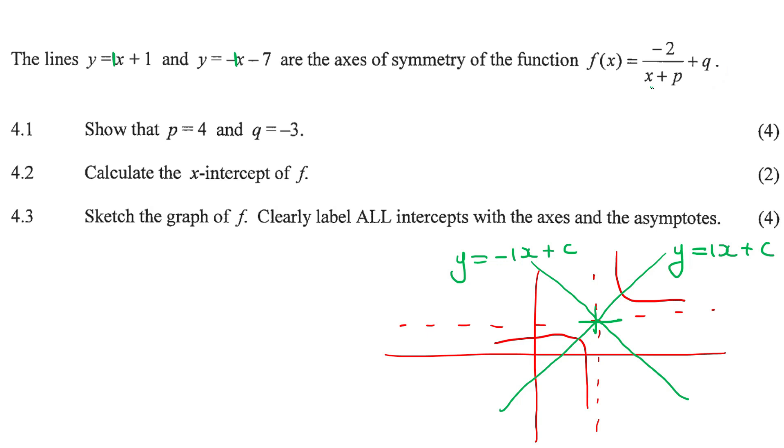Now remember that this part here is your vertical asymptote, the one that goes like this, and then this here is your horizontal asymptote, the one that goes like this. So if I can take this equation, and I can take this equation, and I can make them equal to each other, that'll help me to find this little point in the middle here.